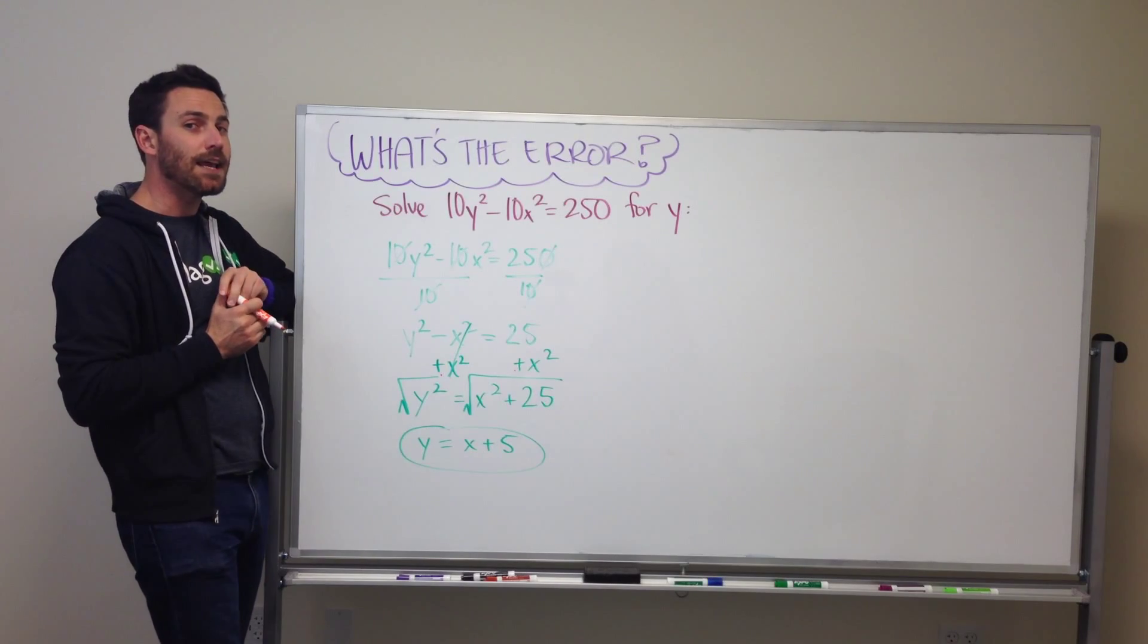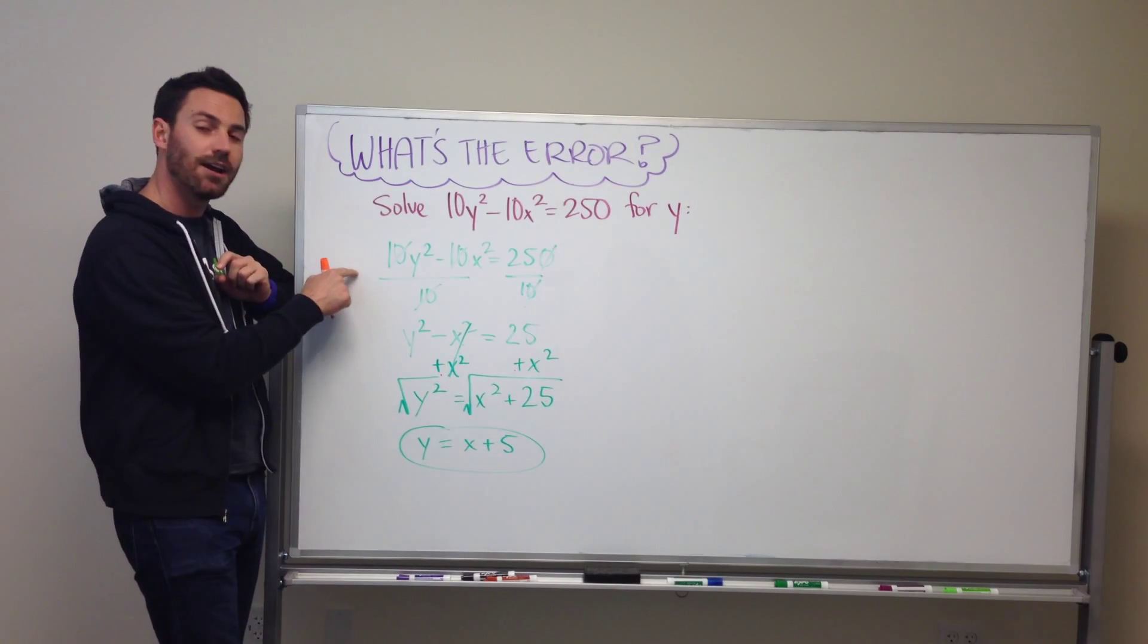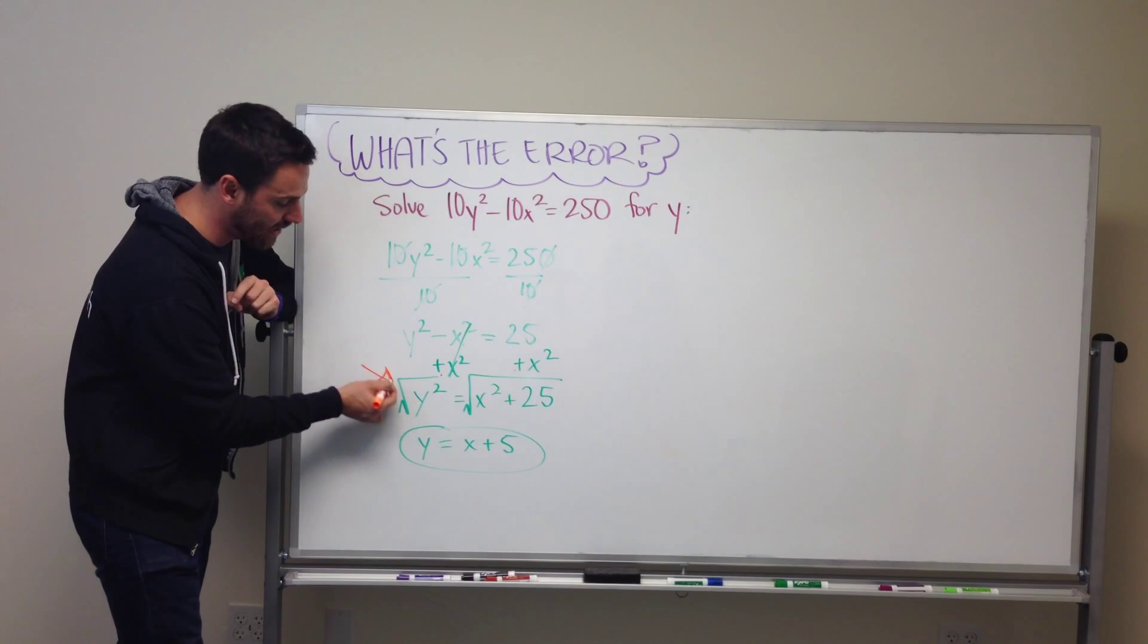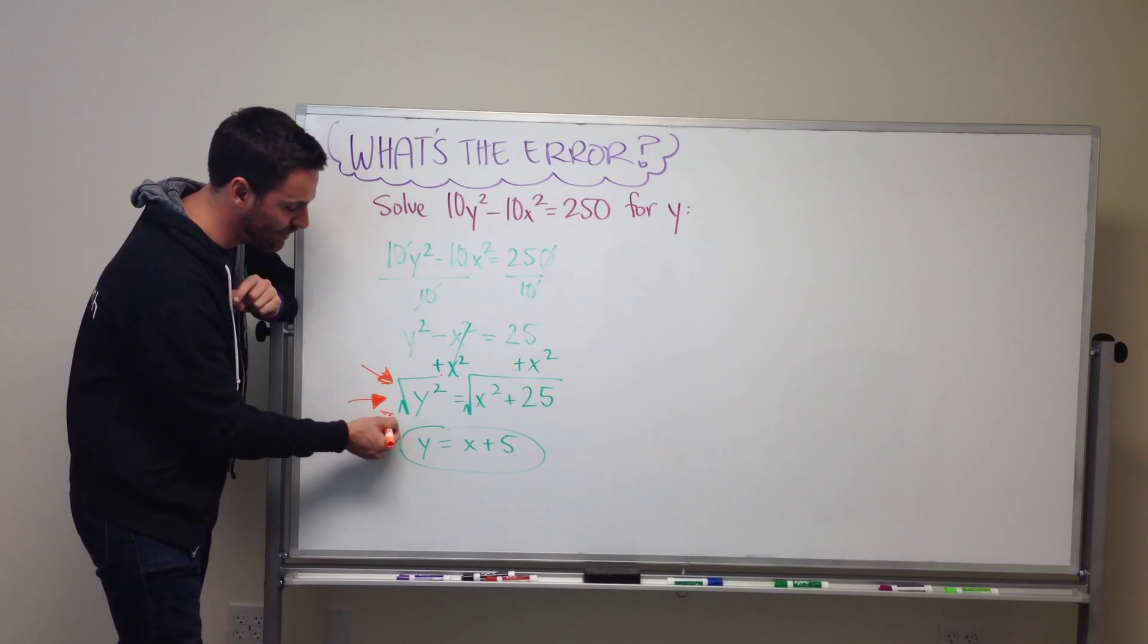Do you think you see the mistake? Did you see it? Is it up here? No, it's down here. This is the big mistake. No, no, no, don't do this.